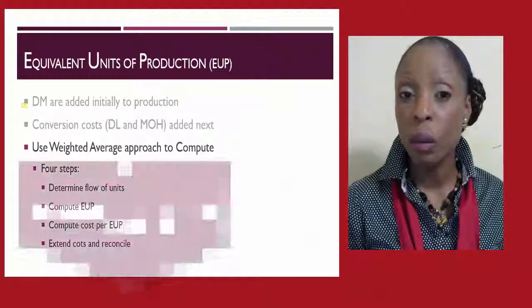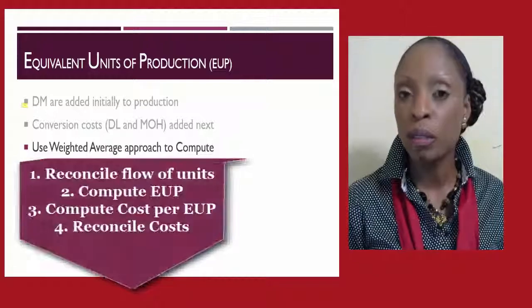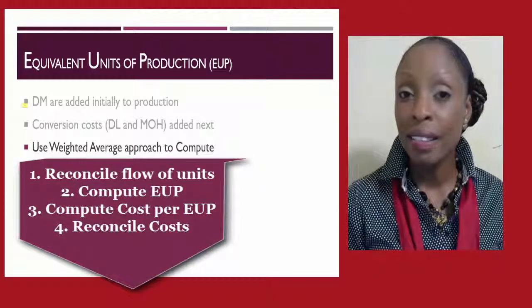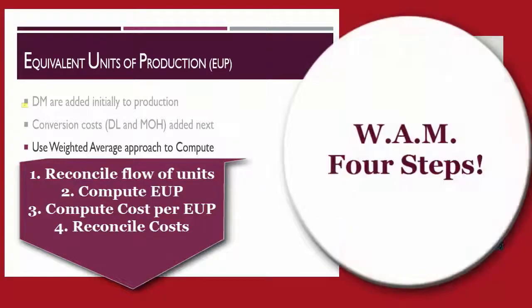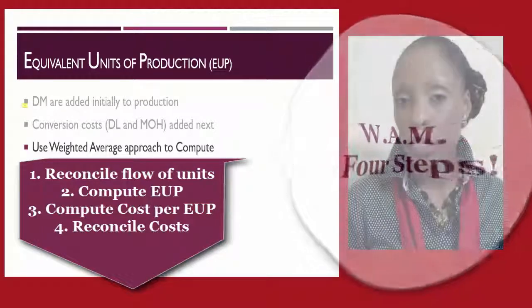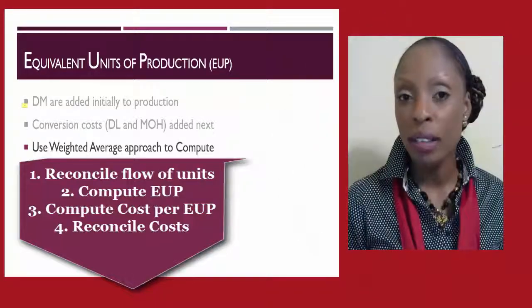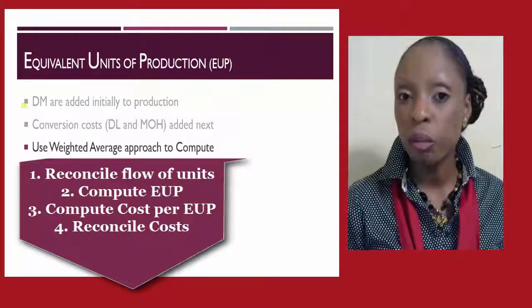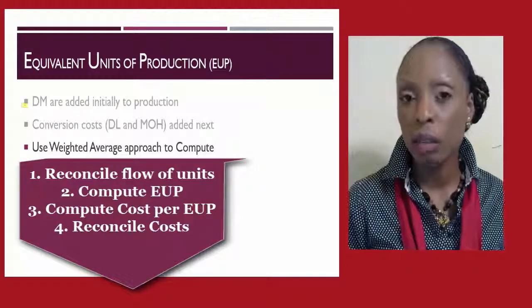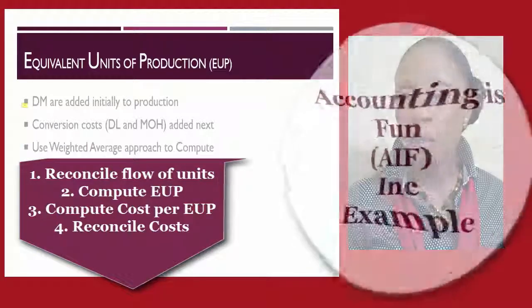We will focus on the weighted average approach to compute the equivalent units of production. This approach involves only four steps: first, identify the flow of units; second, compute the equivalent units of production; third, compute the costs for equivalent units of production; and fourth, extend those costs and reconcile our initial product costs to our costs when applied on a per-unit basis.